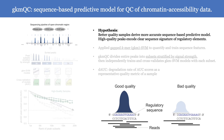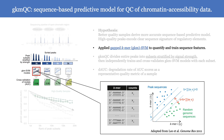We hypothesized that better quality samples derive a more accurate sequence-based predictive model, because high-quality peaks have a clear sequence signature of regulatory elements. So we applied GKM-SVM to quantify and train sequence features, and the trained GKM-SVM stores a weighted vector of K-mers that represent the sequence space of open chromatin peaks.